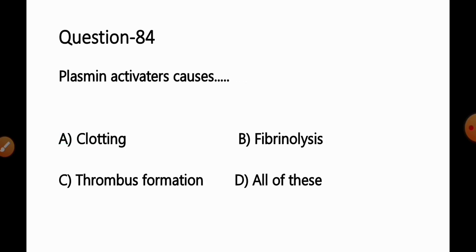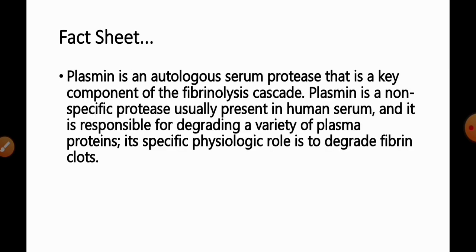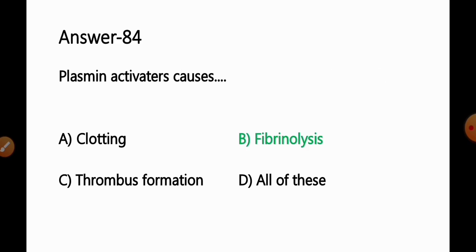Question No. 84: Plasmin activator causes — Option A: Clotting; B: Fibrinolysis; C: Thrombus formation; D: All of these. Plasmin is an endogenous serum protease and a key component of the fibrinolysis cascade. It is a non-specific protease present in human serum responsible for degrading various plasma proteins, with its specific physiological role being the degradation of fibrin clots. So Option B — fibrinolysis — is the correct answer.